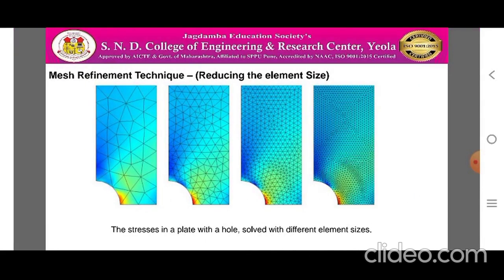The mesh refinement technique of reducing the element size is the easiest mesh refinement strategy, with element size reduced throughout the modeling domain. This approach is attractive due to its simplicity, but the drawback is that there is no preferential mesh refinement in regions where a locally finer mesh may be needed.